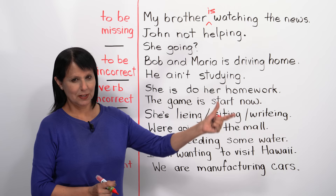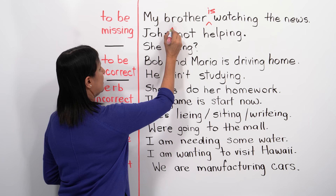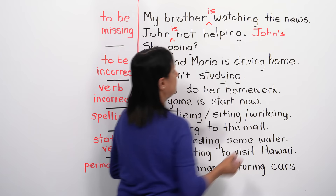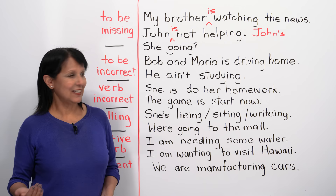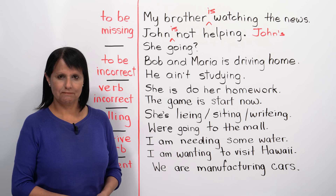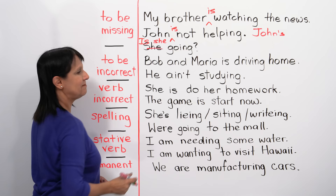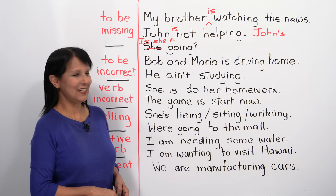The same can happen in a negative sentence. For example, 'John not helping' is wrong. The correction is 'John is not helping,' or contracted: 'John's not helping' or 'John isn't helping.' Similarly in a question — instead of saying 'She going?' — the correct form is 'Is she going?' We can't have this tense without the verb 'to be.'